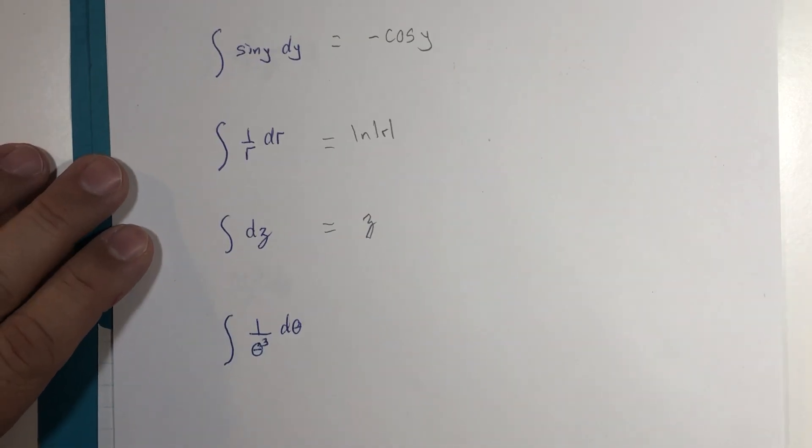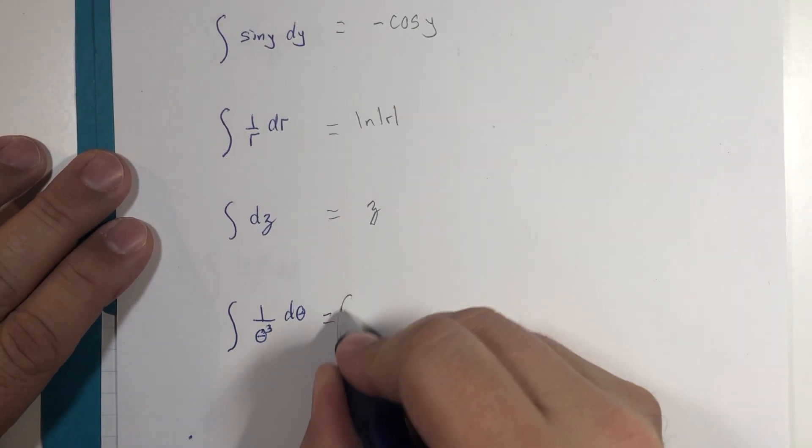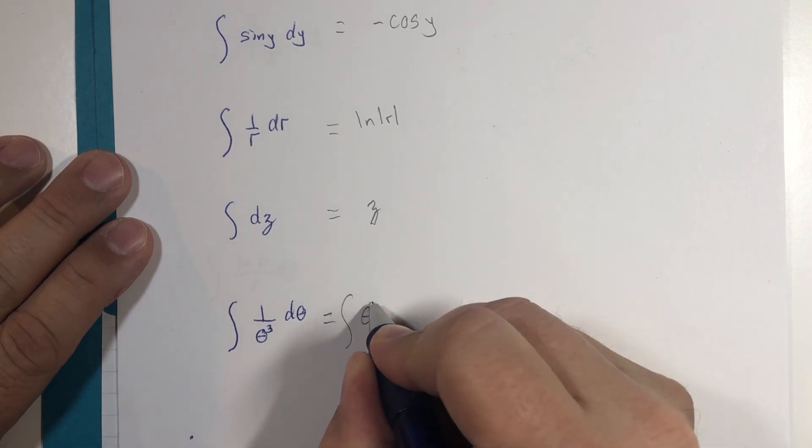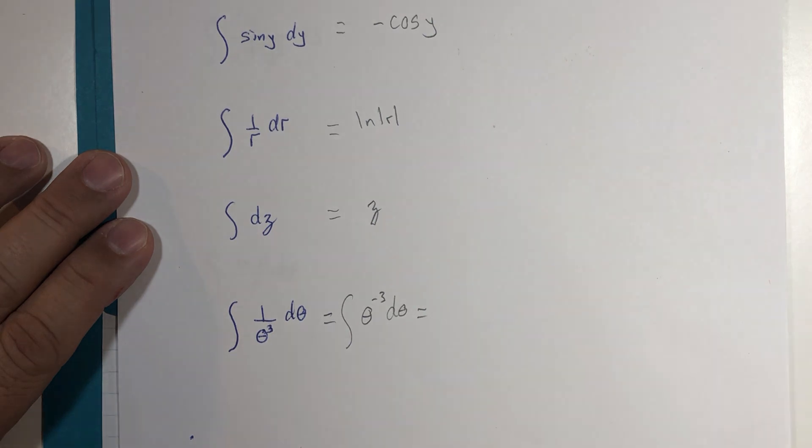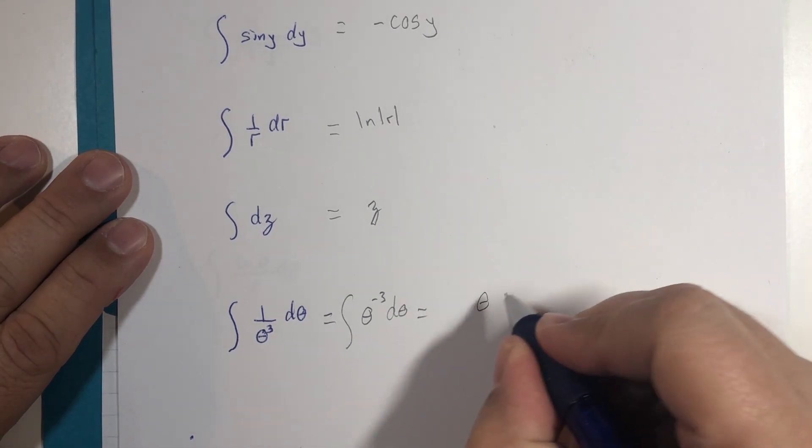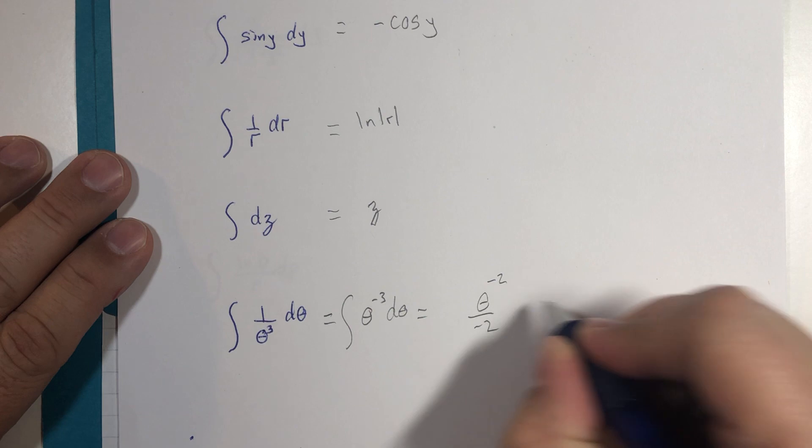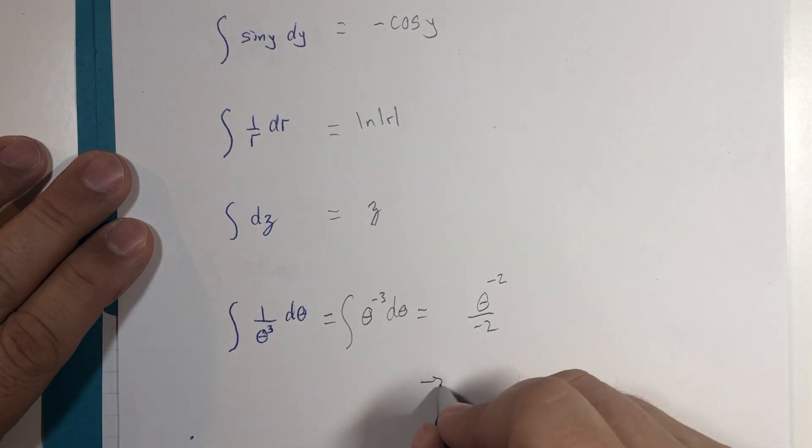And for this last problem, the power rule could be used yet again. This would be theta to the negative third power with respect to theta, and this would be theta add one get negative two divided by negative two and a constant, ultimately getting us to negative one over two theta squared.